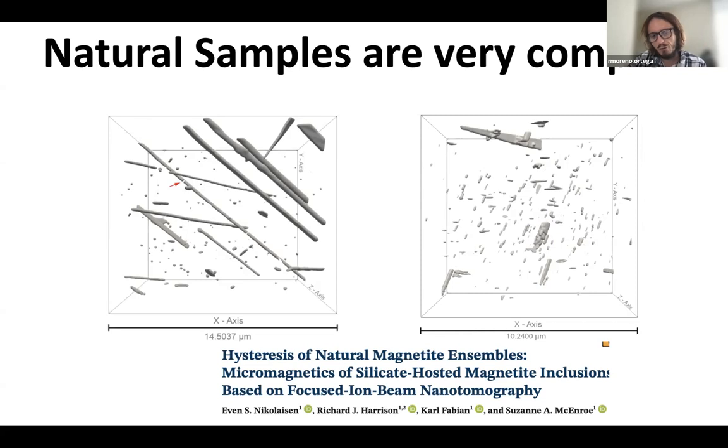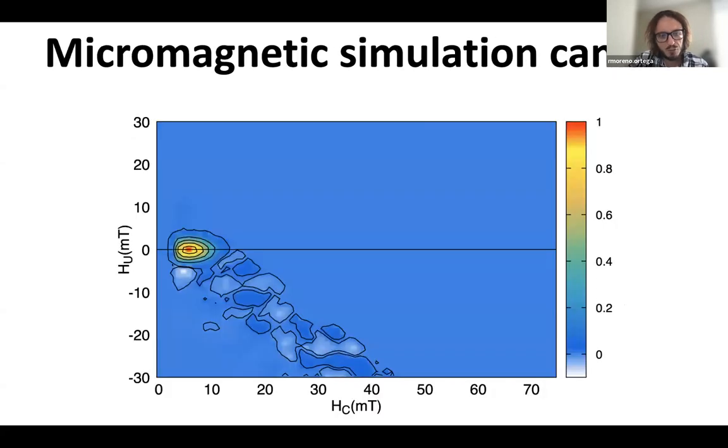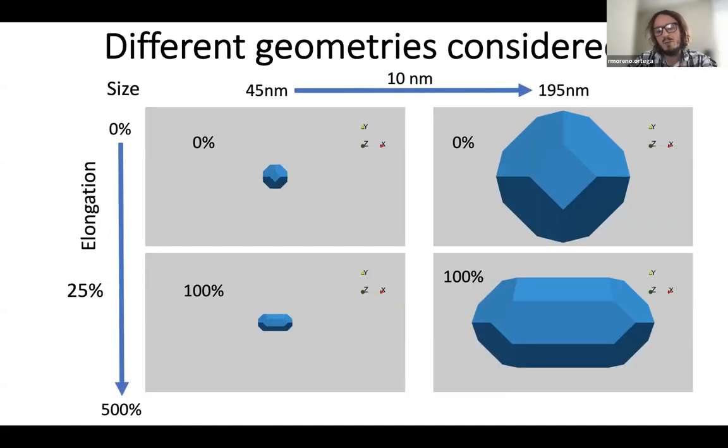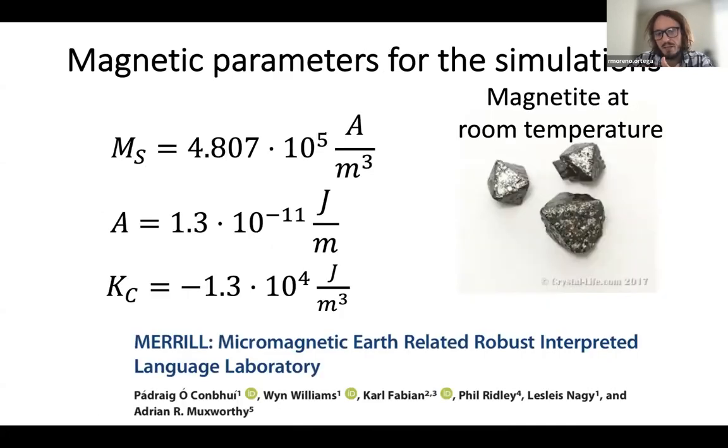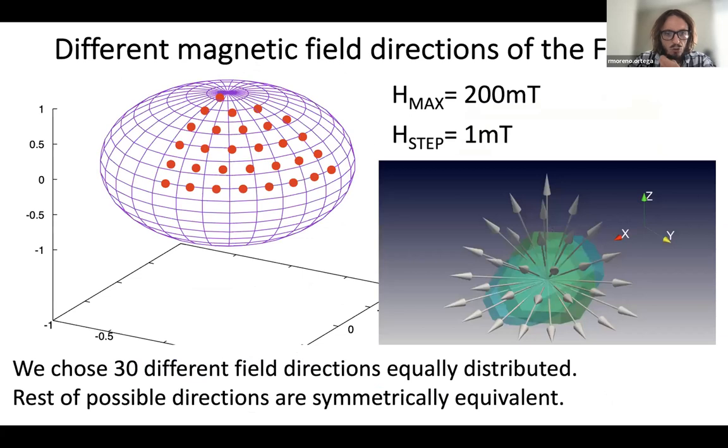By using micromagnetic simulations, we can simulate separately each one of the components a natural sample can have: the different sizes it has, the different elongations it has, different materials, also the different orientations it presents on the natural sample. And we can create a huge database.